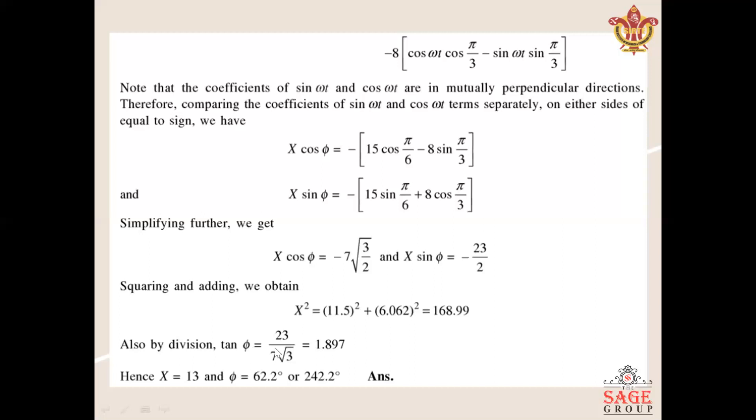That is X sin φ divided by X cos φ. To find the angle, we take the inverse. So tan inverse of this value gives us φ = 62.2 degrees or 242.2 degrees.